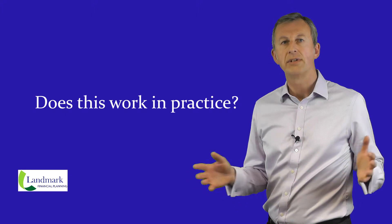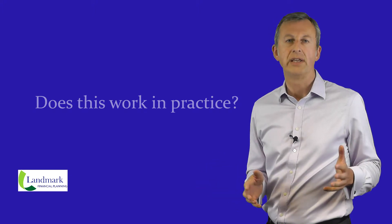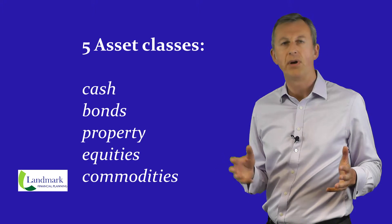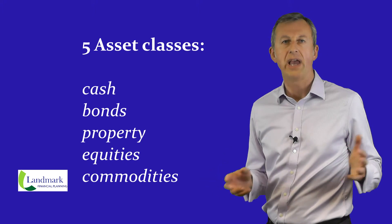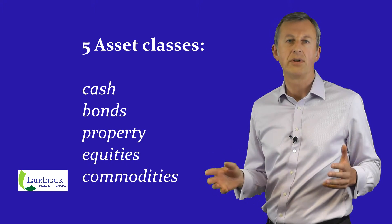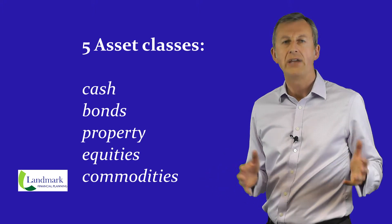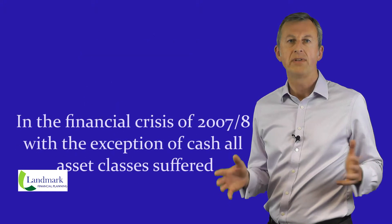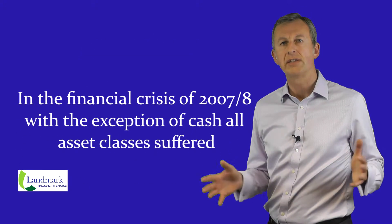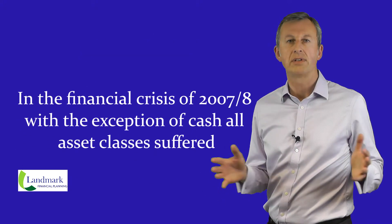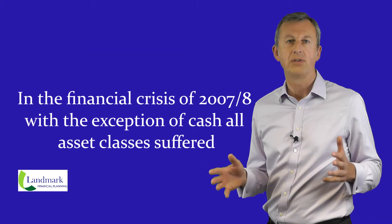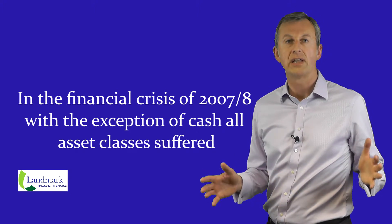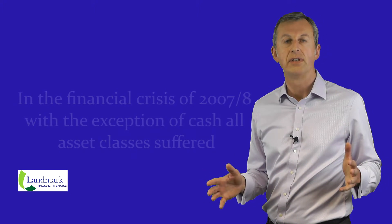The answer is to some degree. The five asset classes — cash, bonds, property, equities and commodities — are not perfectly correlated, and we found in the financial crisis of 2007 and 2008 that with the exception of cash, all asset classes suffered.